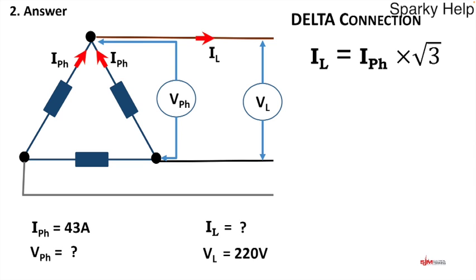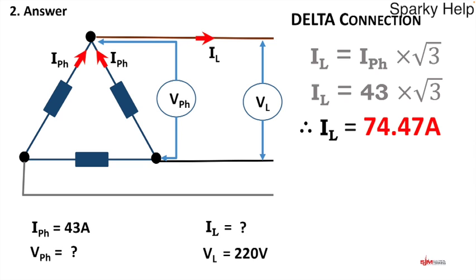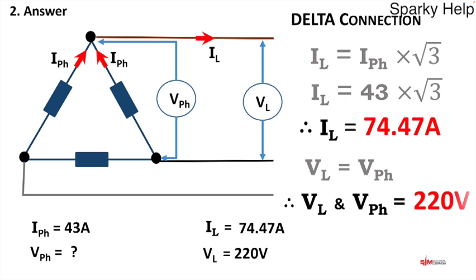Now fill in the missing answers. il equals ip times root three. We know ip, so it becomes 43 times the square root of three — il therefore comes to 74.47 amps. For vl and vp: in delta, vl equals vp, so both vl and vp are 220 volts.